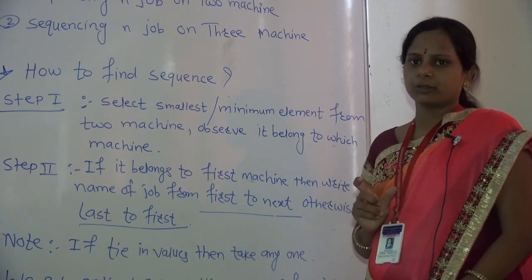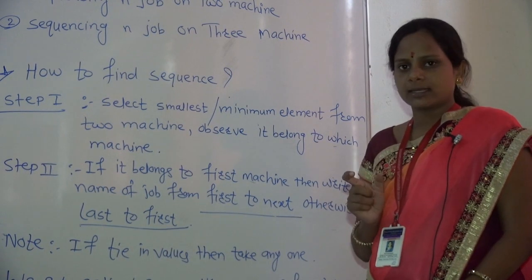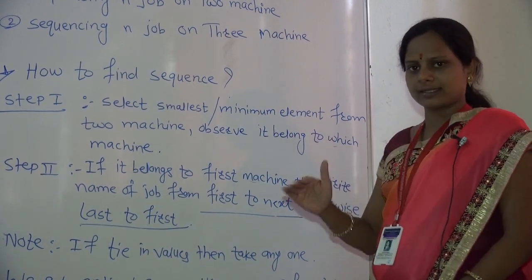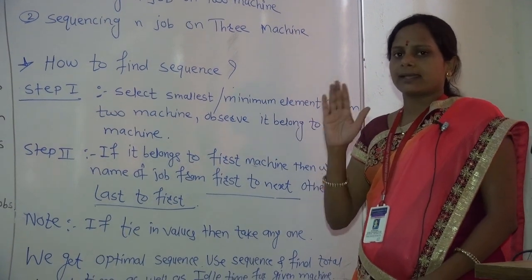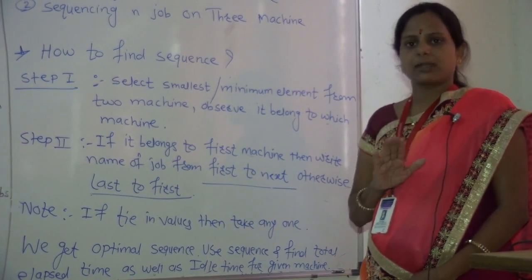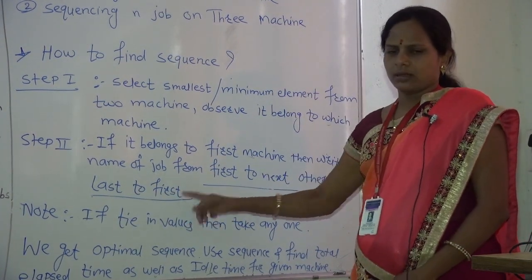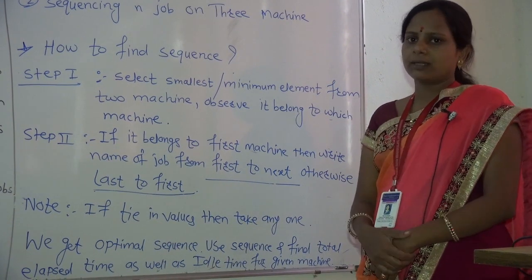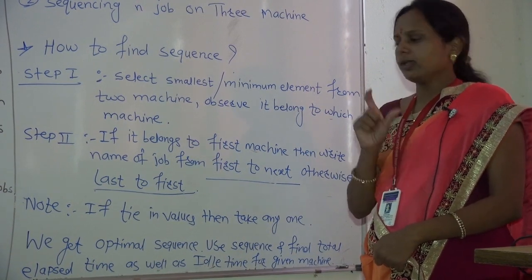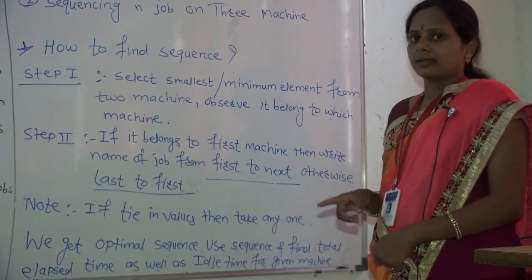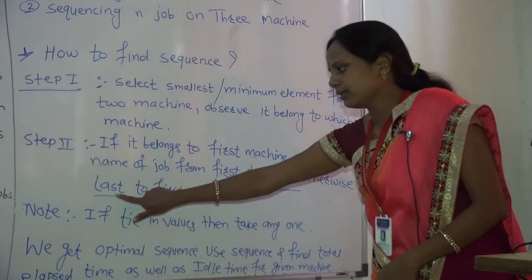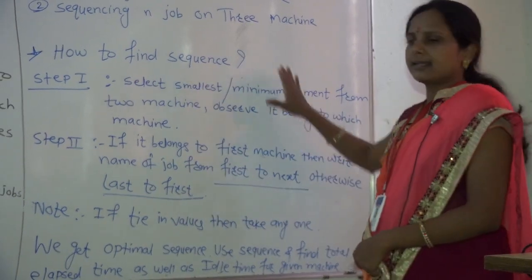If the smallest element belongs to the second machine, then place the job from last to first (i.e., at the end of the sequence). To find the sequence, first choose the smallest element, check which job it belongs to, and place that job first to next. If the minimum value belongs to the second machine, then place it last to first. Note: if there is a tie in values, then take any one as you wish.